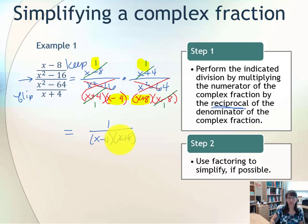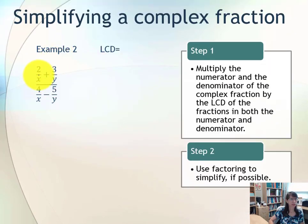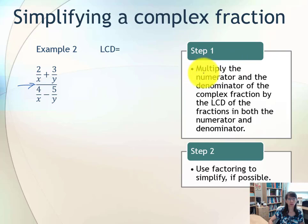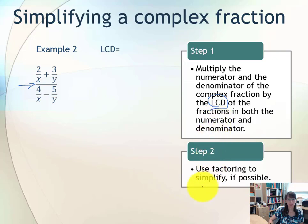In example 2, we do not have a single fraction in the numerator. We have two separate fractions with addition, and in the denominator we have two separate fractions with subtraction. So the steps here are to multiply the numerator and denominator of the complex fraction by the lowest common denominator of all the fractions present. We're looking at denominators of x, y, x, and y — four different denominators in this problem.